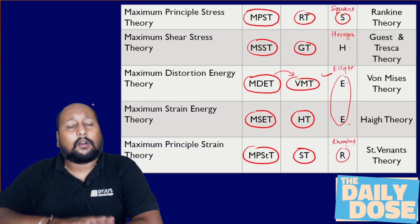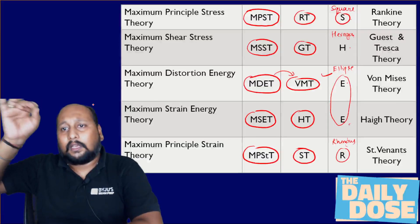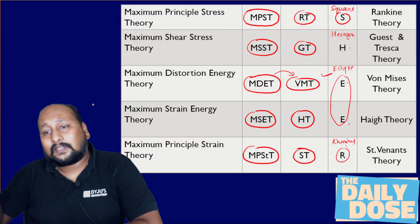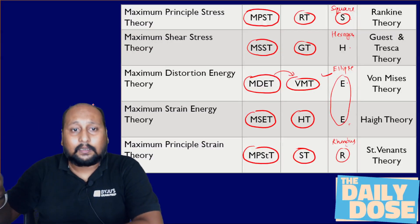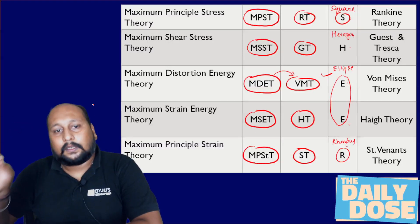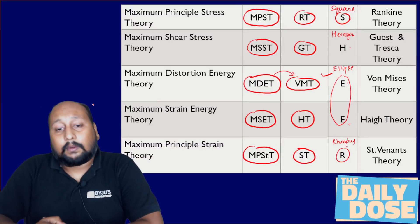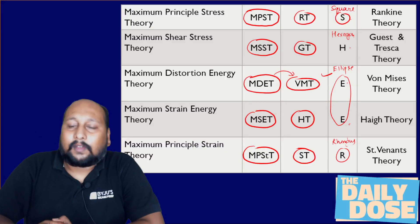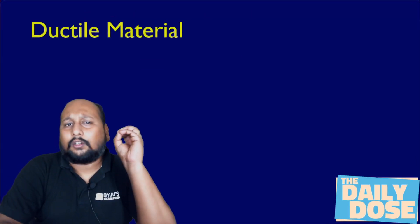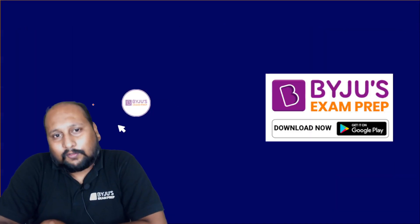Let me show the table one more time. Maximum principal stress theory deals with Rankine theory — shape is square. Maximum shear stress theory (MSST) — Guest and Tresca theory — deals with hexagon. Maximum distortion energy theory (VMT) deals with ellipse. Maximum strain energy theory — Higgs theory — is ellipse again. And maximum principal strain theory — St. Venant's theory — is rhombus. I hope you all understood this simple technique to answer almost any 1-mark question from the concept of theories of failure.